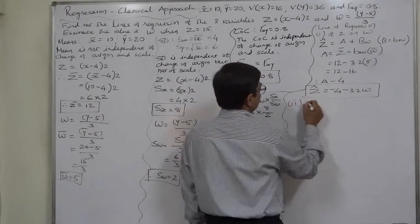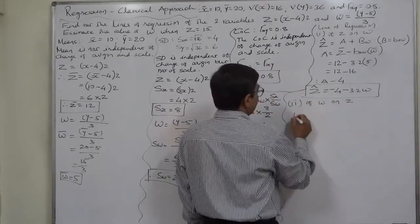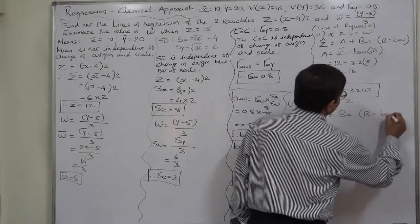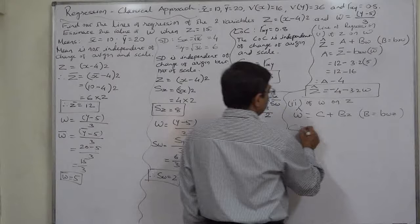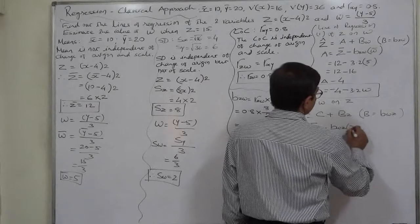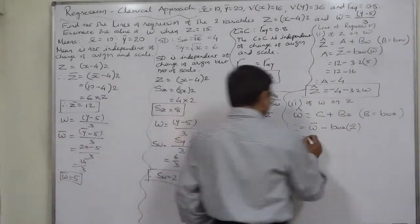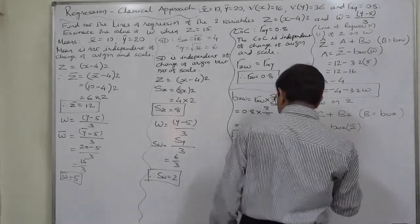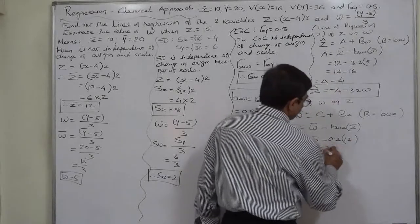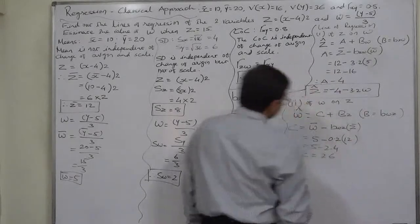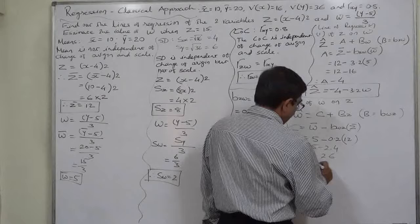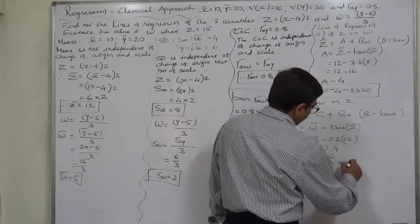Line of regression of W on Z: W-hat equals c plus B_wz times Z, where c equals W-bar minus B_wz times Z-bar = 5 minus 0.2 times 12 = 5 minus 2.4 = 2.6. Hence the equation of the line of regression of W on Z is: W-hat equals 2.6 plus 0.2Z.